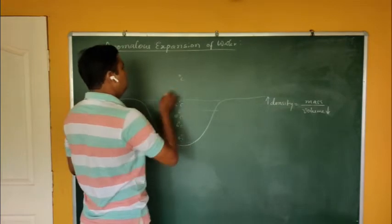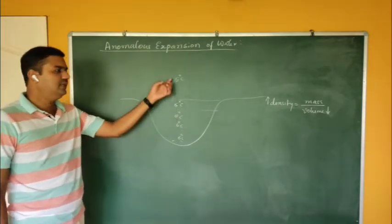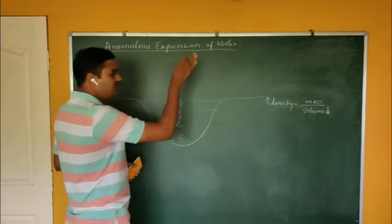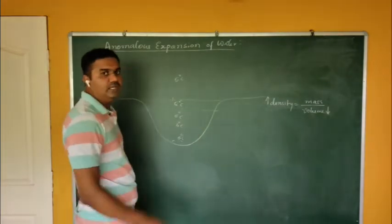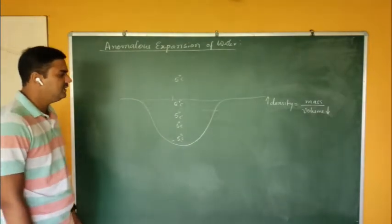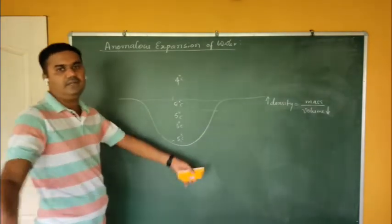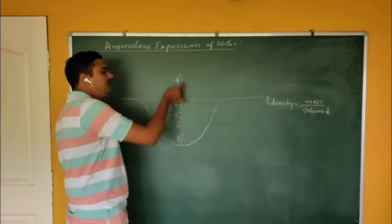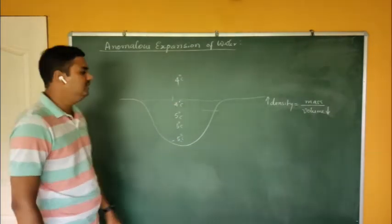As the season progresses, the surrounding drops to 5°C, then 4°C. Each time, heat flows from the lake to the atmosphere, the top layer cools, its density increases, it sinks, and the lower layer rises. This process repeats — all layers reaching 5°C, then all reaching 4°C.